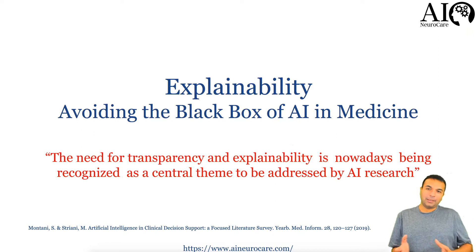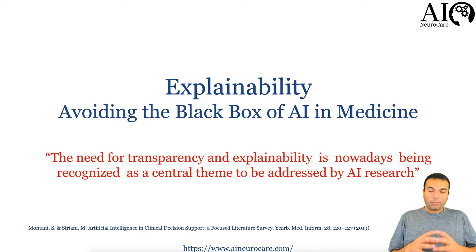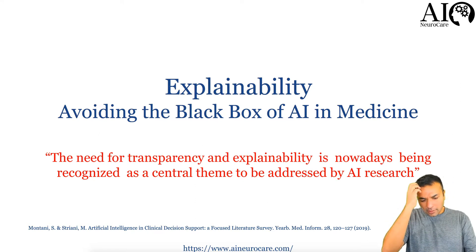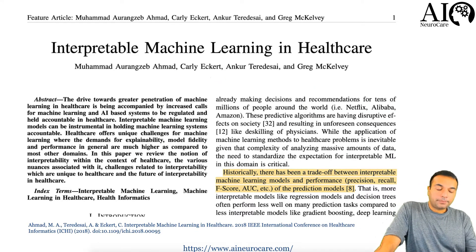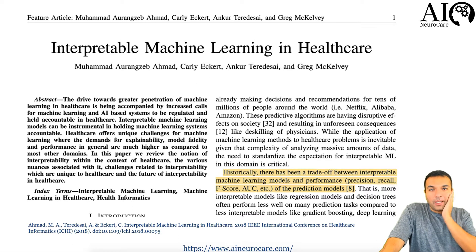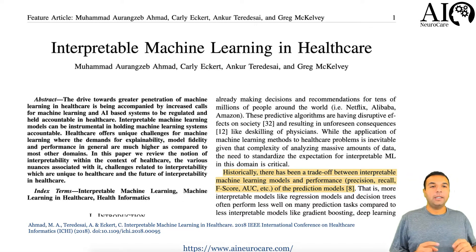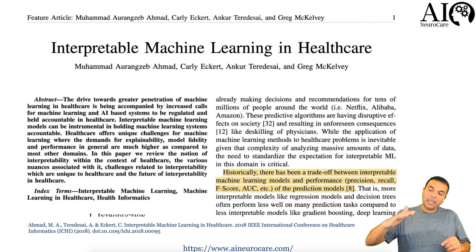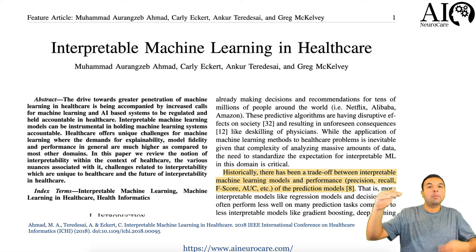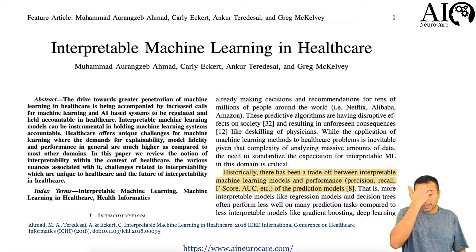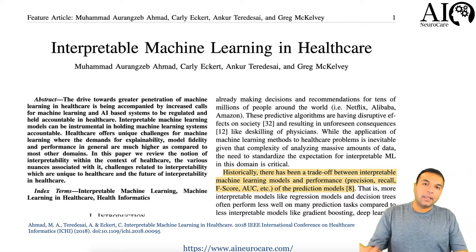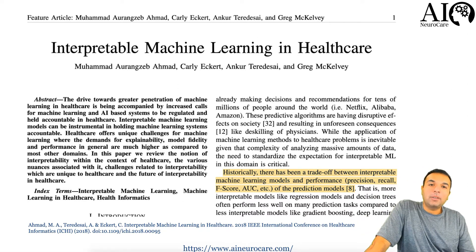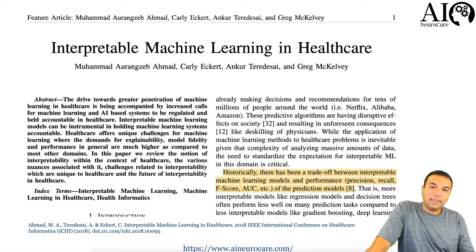The last important topic is explainability. AI is like a black box — you know the input, you know the output, but what happens in the middle is a complete mystery. This is the biggest challenge, and here's why: historically there has been a trade-off between interpretable machine learning models and performance. The more you try to make a model interpretable, unfortunately you have to decrease its performance. Because you don't have to go through each layer and explain what was done at every step, the model runs faster and more accurately — but you lose transparency.